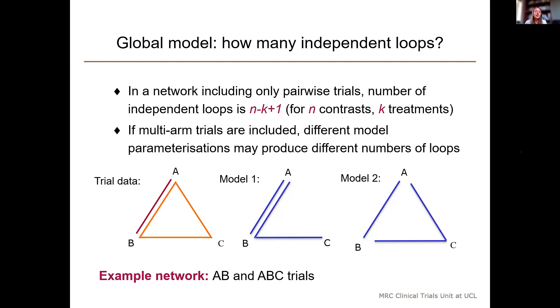If we choose to use the AB and BC contrasts and fit model one, then you can see that no loops are created in the model. But if we use the AC and BC contrasts and fit model two, then the model will include one loop.